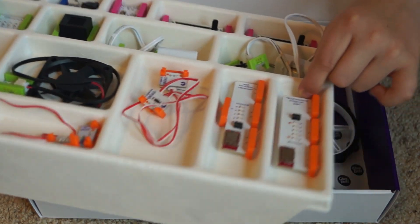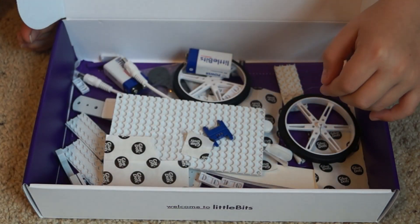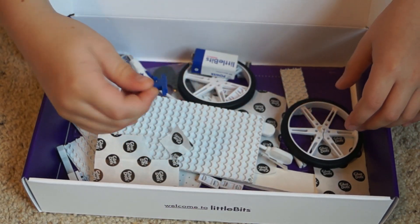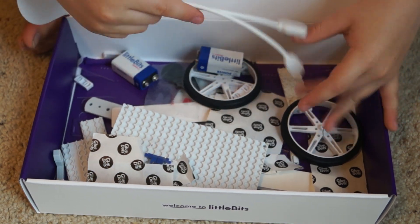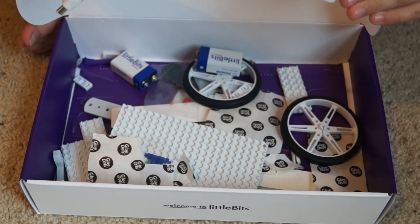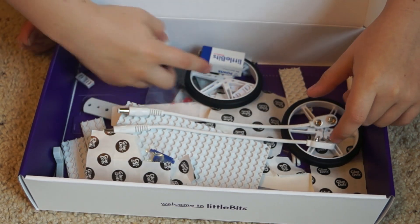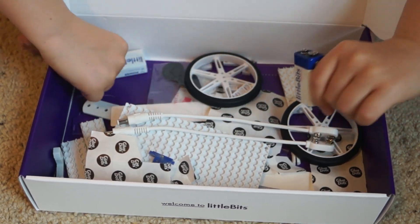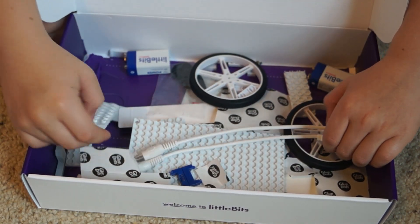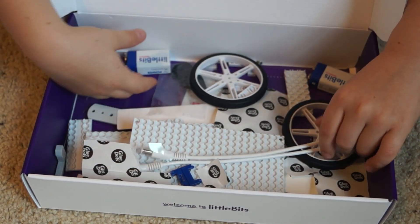Then we have all this other stuff down here, little end pieces I'm guessing. We have two battery cords for 9 volts, and then there are little bit batteries, a sensitivity screwdriver, and all these other parts which we'll get to later.